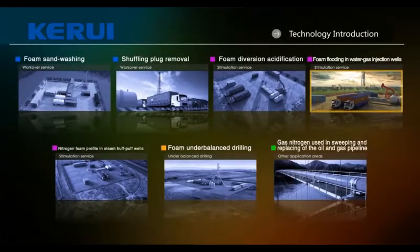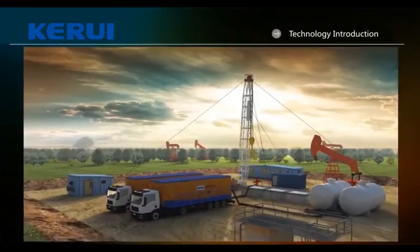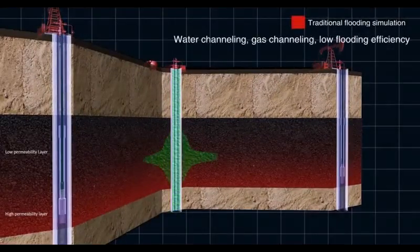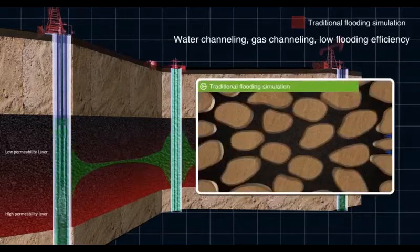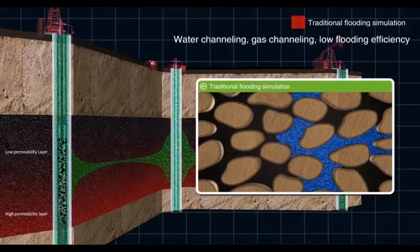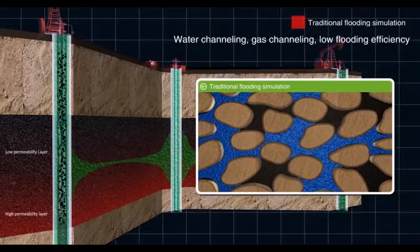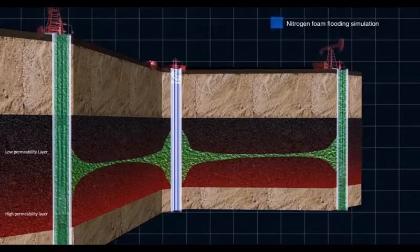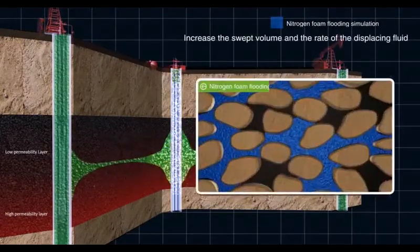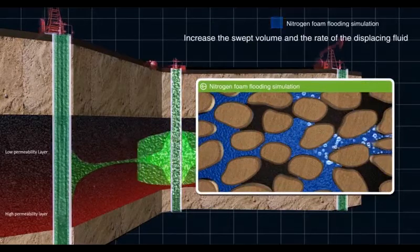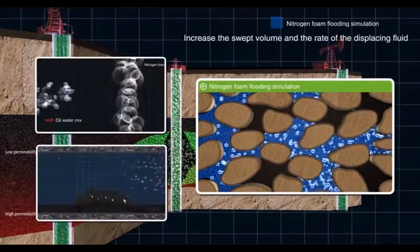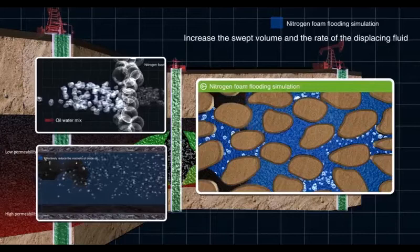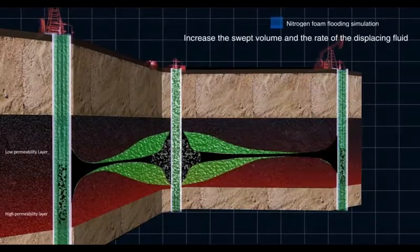In foam flooding for water and gas injection wells, traditional water-gas injection development is likely to cause water channeling, gas channeling, and low displacement efficiency due to formation heterogeneity and viscosity differences between water, gas, and reservoir oil. Using nitrogen foam flooding increases swept volume and displacement efficiency, improves the oil-water mobility ratio, and adjusts the injection profile. Foam deforms when it contacts oil and remains stable when it contacts water, forming a stable barrier where water saturation is high without plugging oil flow paths.